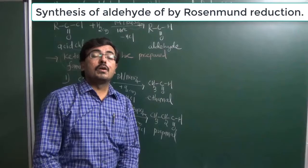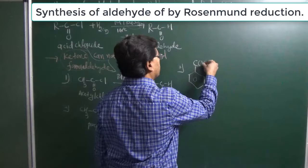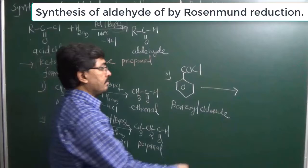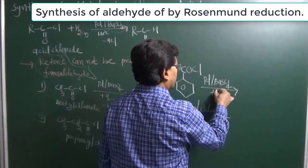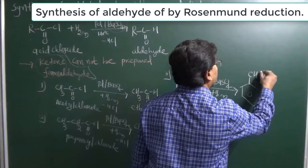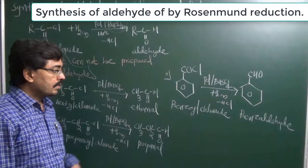By using Rosenmund Reduction Reaction, one can also prepare aromatic aldehydes. Suppose we have benzoyl chloride. Reduction is done by using Palladium over Barium Sulphate. The same way, hydrochloric acid will be the by-product; chloride will be substituted by hydrogen. As a result we get the structure benzene ring with CHO. This structure is known as benzaldehyde.